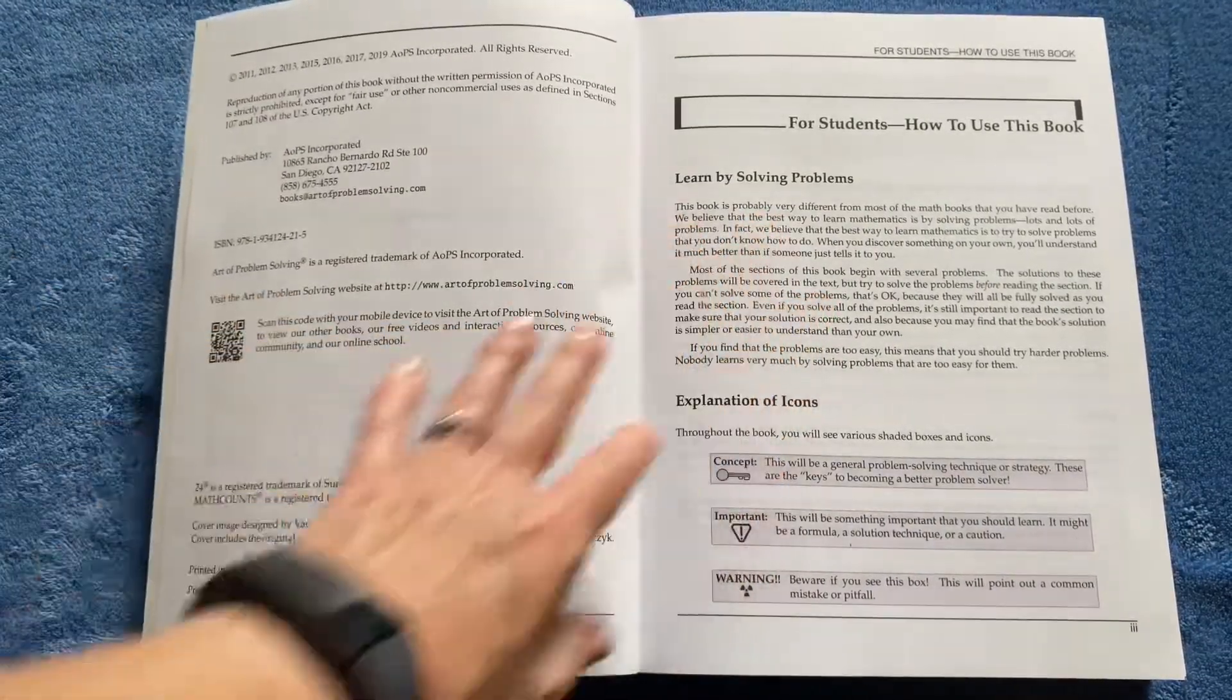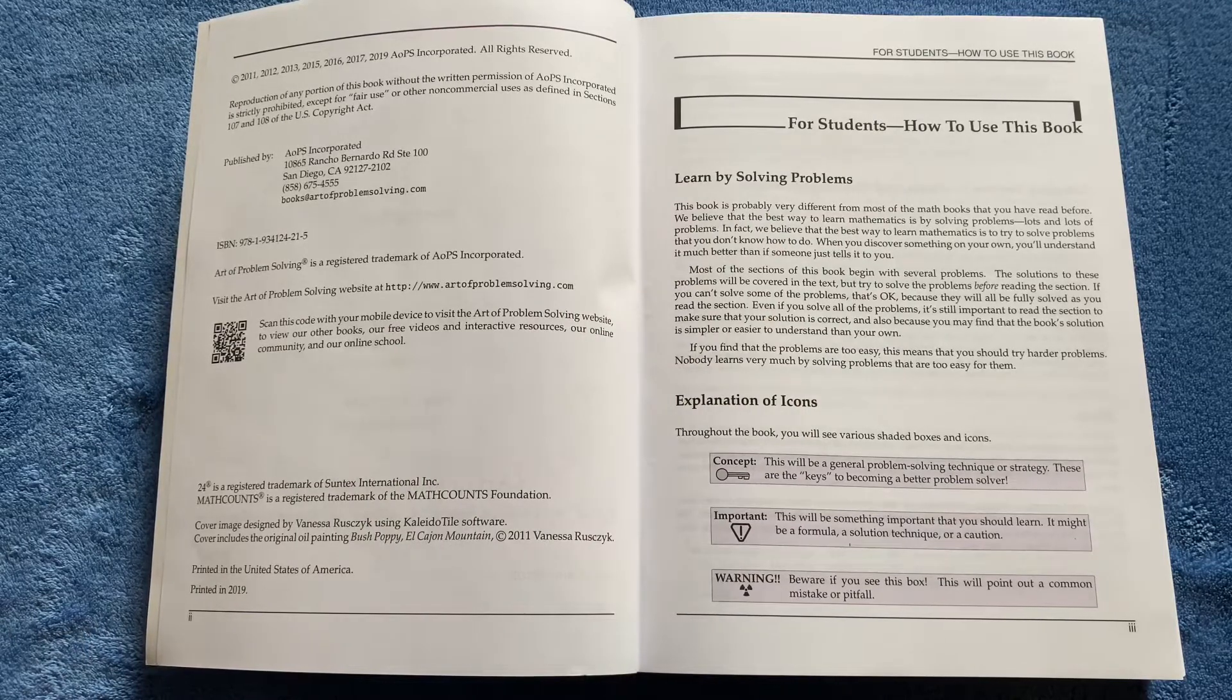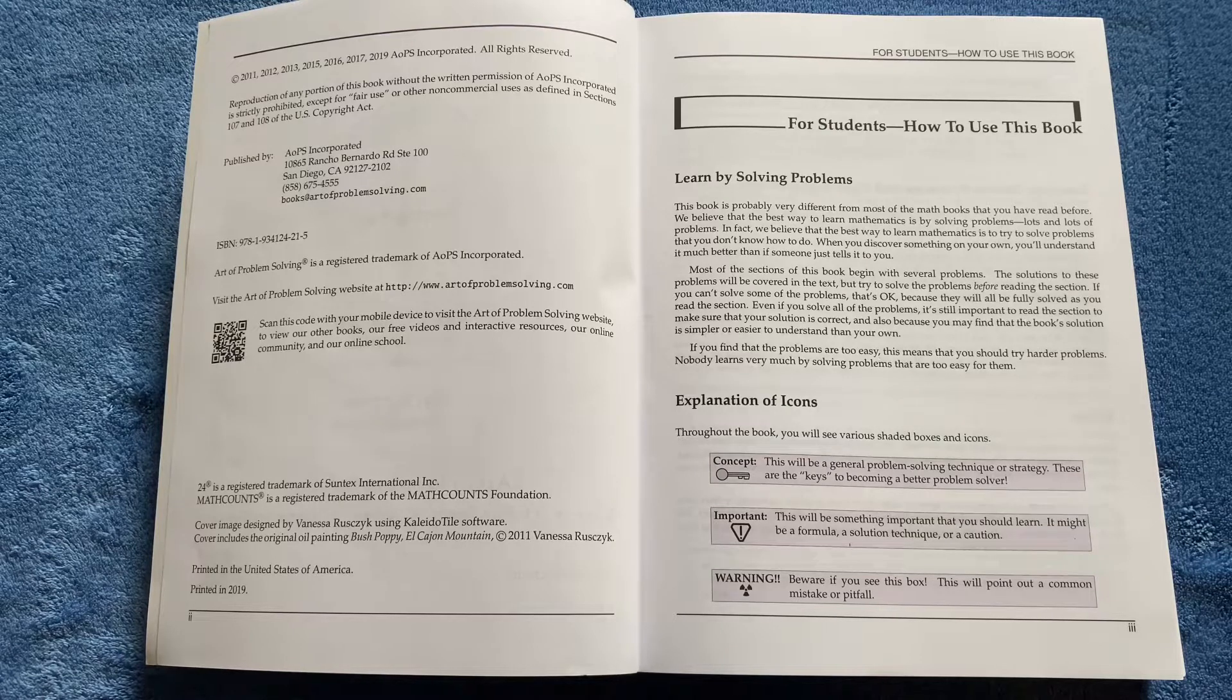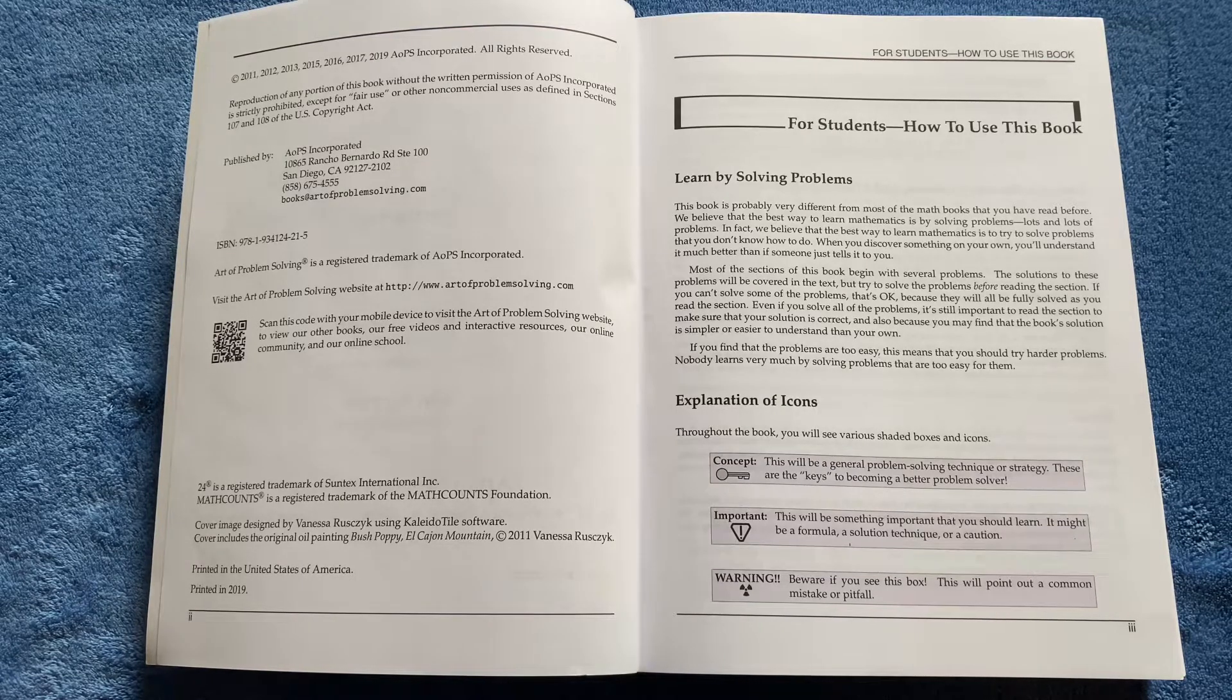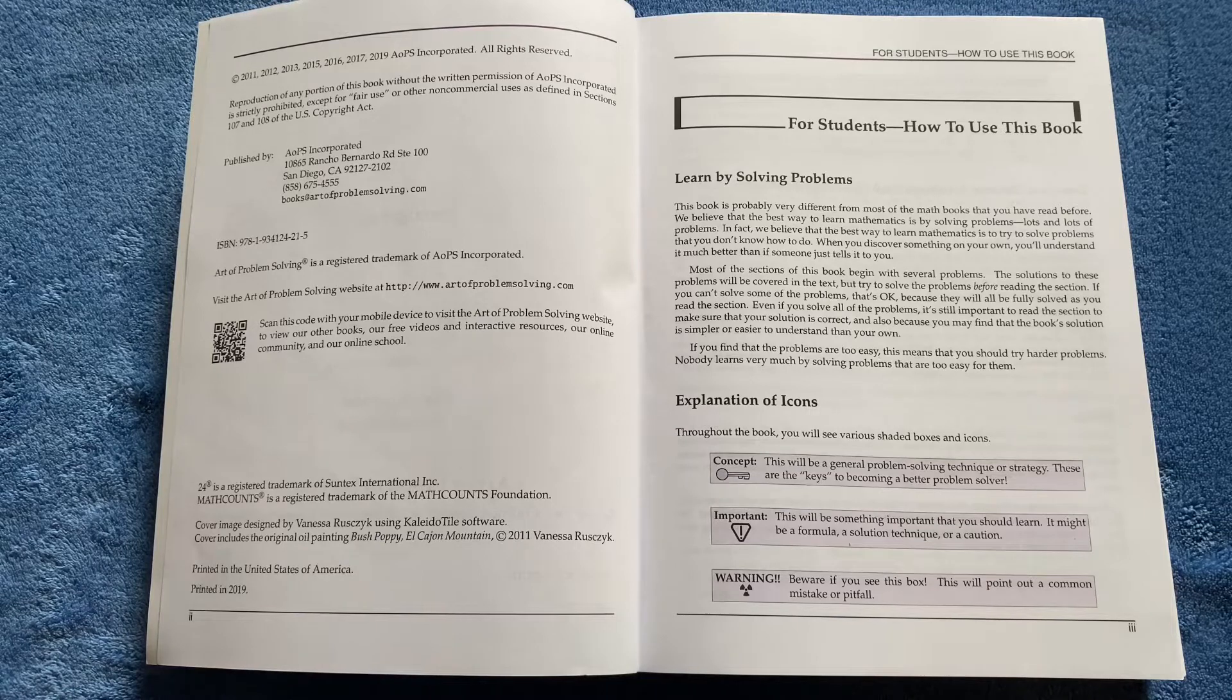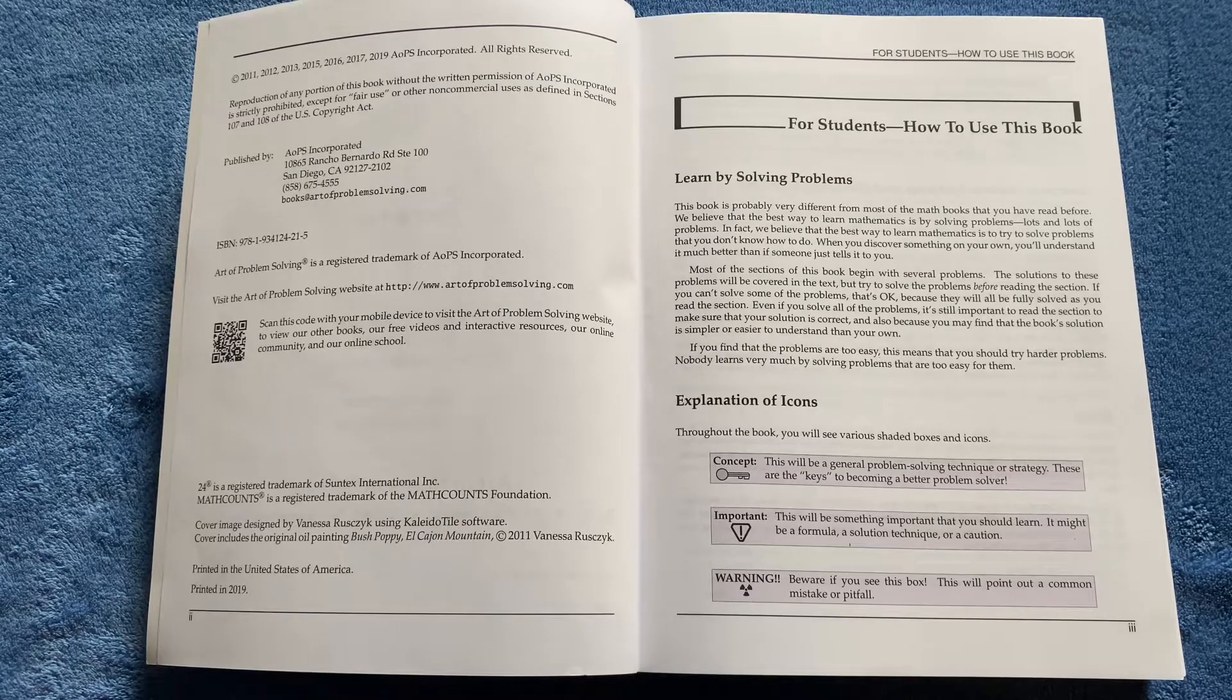Let's take a moment to look back at how to use this book. It says the very first sentence says it's very different from most math books that you've read before. We believe the best way to learn mathematics is by solving problems, lots and lots of problems. In fact, we believe that the best way to learn mathematics is try to solve problems that you don't know how to do. All right, this is an approach that some people are going to be like, what? But for some kids, and particularly for the bookworm, I think this is going to be a successful approach. We'll find out.